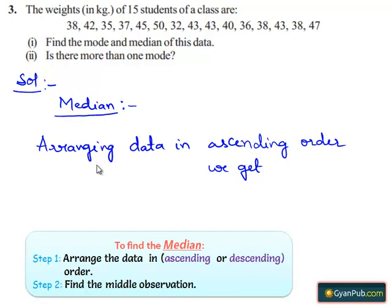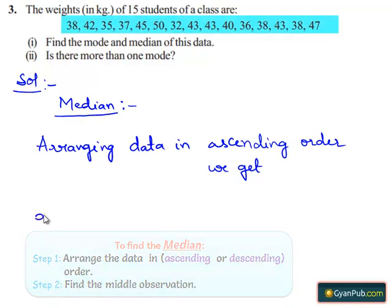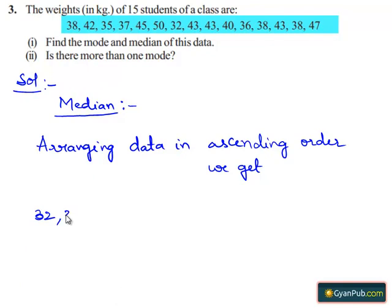Arranging the data in ascending order, we get 32, 35, 36...